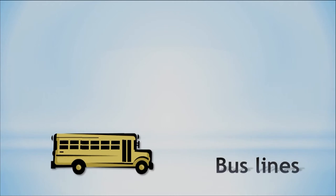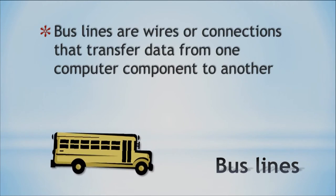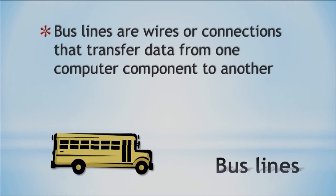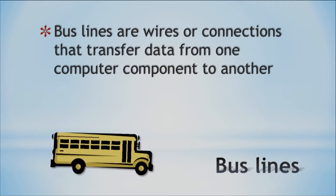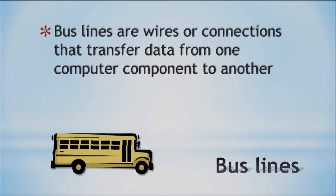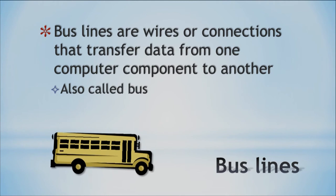The last thing we'll cover today is the bus line. You can think of it like a school bus — it picks up your data in the morning. These are connections on the circuit board that transfer data from one computer component to another — sometimes just called a bus. All the different parts of your computer are specialized, so they need to communicate, and that's what the bus line does. That'll do it for today — see y'all later, aloha!